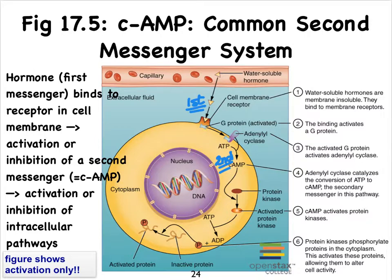This figure illustrates activation of intracellular pathways, but there are also pathways that depend on the same cyclic AMP second messenger system that allow for inhibition — in other words, stopping and preventing the phosphorylation of proteins and preventing further cellular activity.